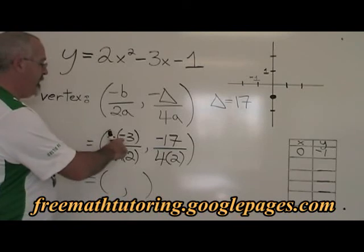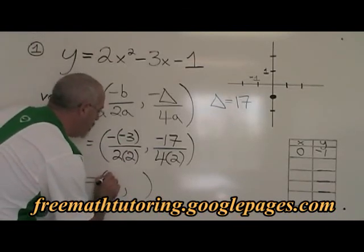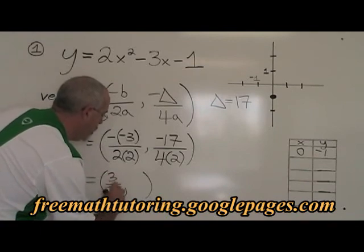The negative of negative 3 is positive 3, and 2 times 2 is 4, so our x coordinate is 3 over 4. Our x coordinate is 3 quarters.